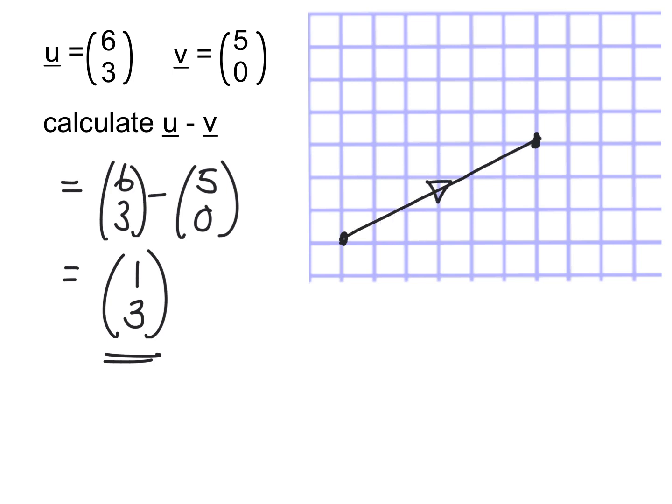It asks me to take away V. So I'm then going to draw the opposite direction of V. So V would be along 5 and then up 0, but this time I have to do the opposite of V. So I'm going to come back 5, 2, 4, 5. So this here is my minus V vector. This is my U vector.